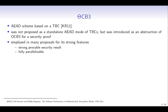ThetaCB3 is probably the most well-known AEAD scheme based on a tweakable block cipher. This was not proposed as a standalone AEAD mode of tweakable block ciphers, but it was introduced as an abstraction of OCB3 for security proof. But it is employed in many proposals for its strong features. For instance, it has a strong provable security result, and it is fully parallelizable, meaning that all the tweakable block cipher calls can be made in parallel.